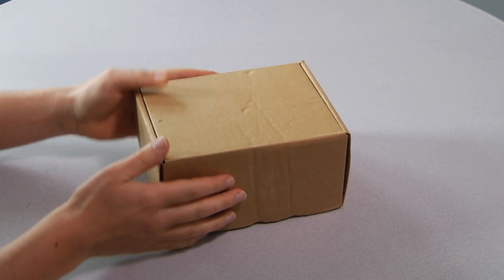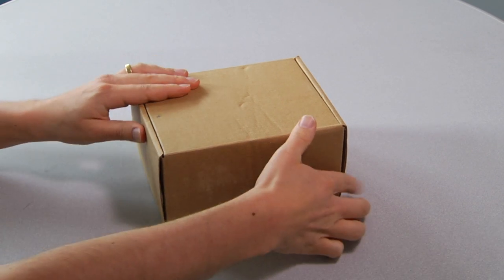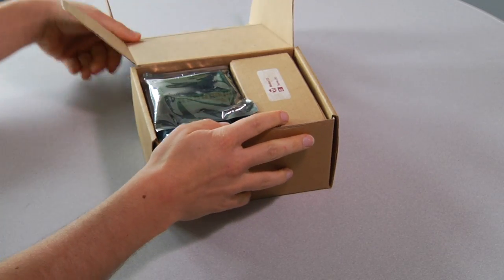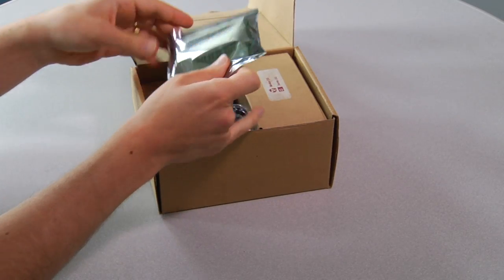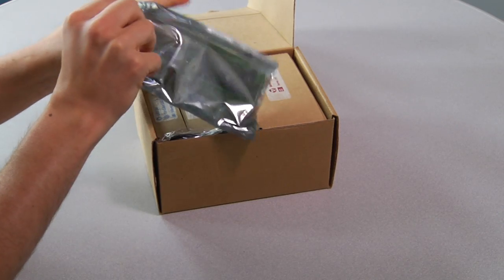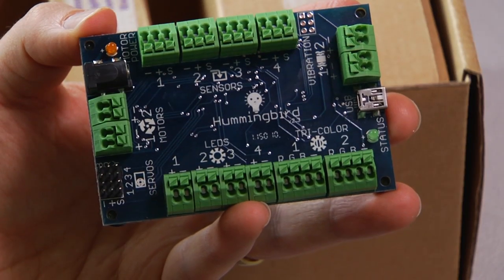So this plain brown box holds the contents of a full Hummingbird kit. And let me show you as you open it up. The first thing that I'm going to pull out here is the Hummingbird controller, which is in its own little anti-static bag. So here's the controller.